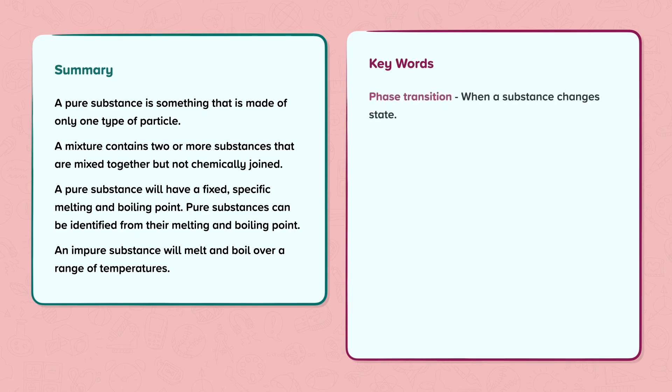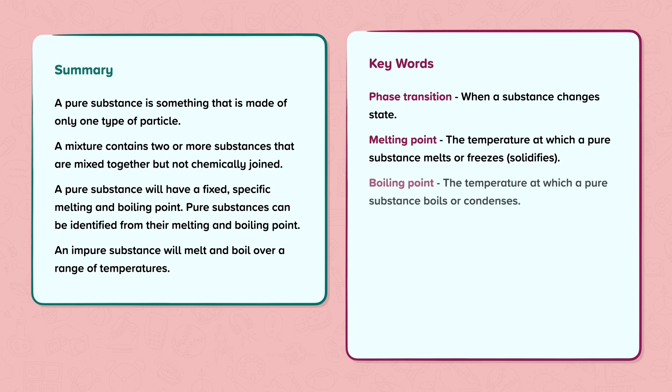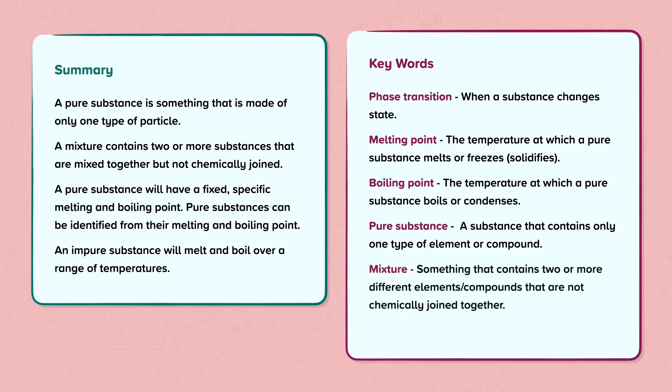Keywords: Phase transition - when a substance changes state. Melting point - the temperature at which a pure substance melts or freezes (solidifies). Boiling point - the temperature at which a pure substance boils or condenses. Pure substance - a substance that contains only one type of element or compound. Mixture - something that contains two or more different elements or compounds that are not chemically joined together. Impure substance - another term for a mixture.